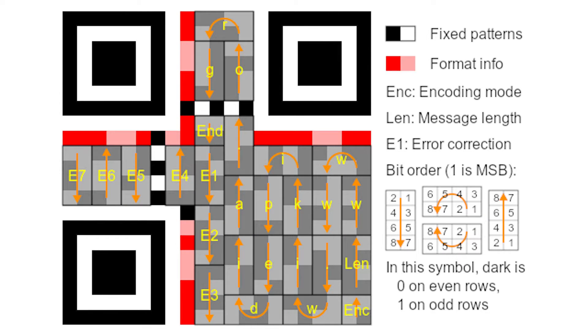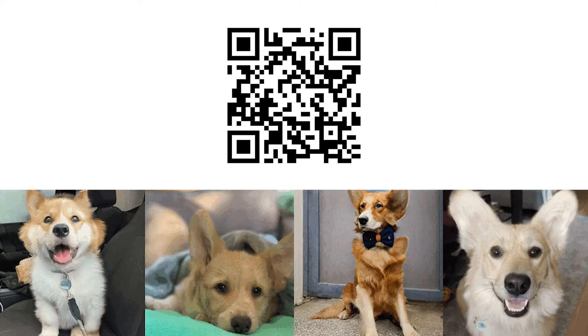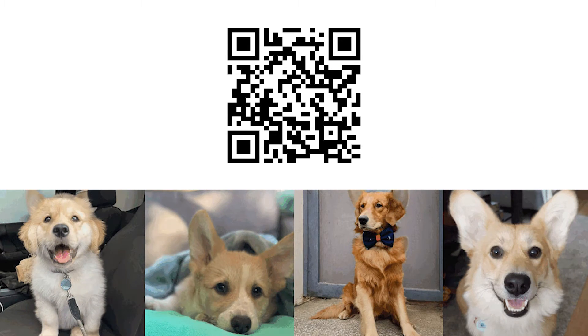Then, based off the version and the formatting, the QR code can be read, with each chunk representing different characters or being useful for error correction. In my free time, I've been working on a few fun projects lately, but the idea of QR codes kind of got stuck in my mind.